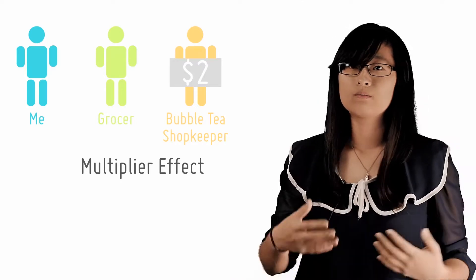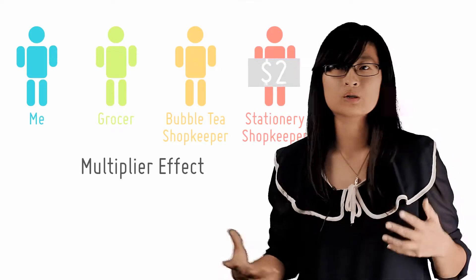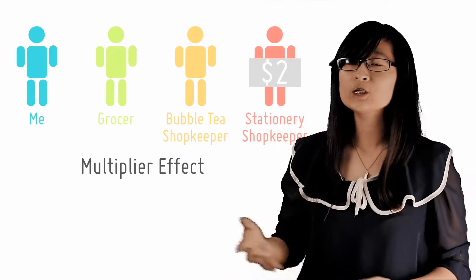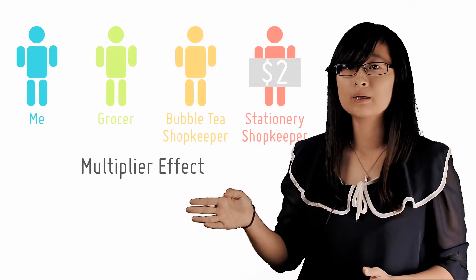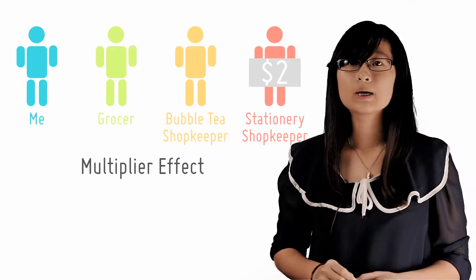Now the bubble tea shop owner, feeling richer as well, goes on to purchase some stationery, for example. At each transaction, one person's spending becomes another person's income.